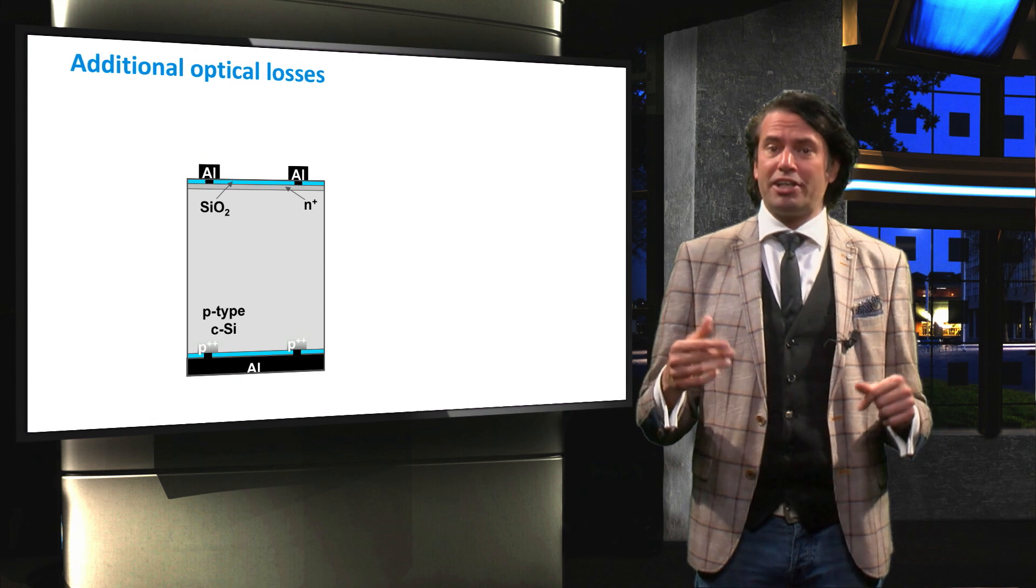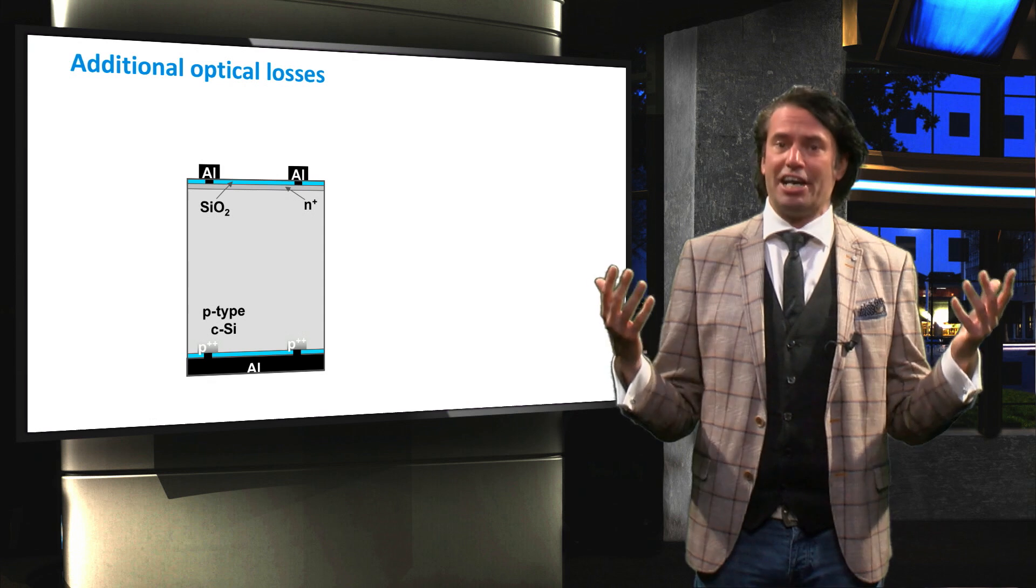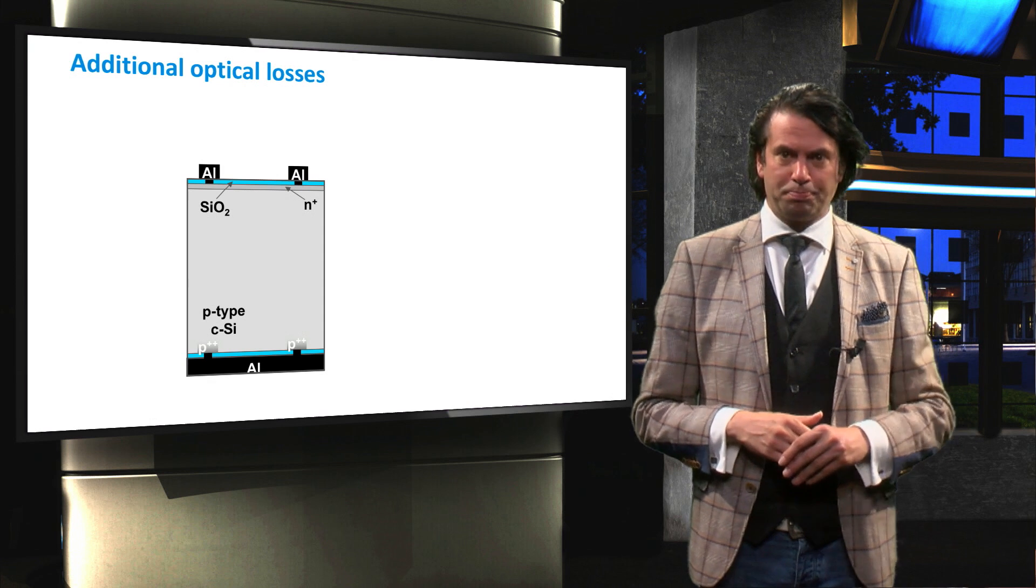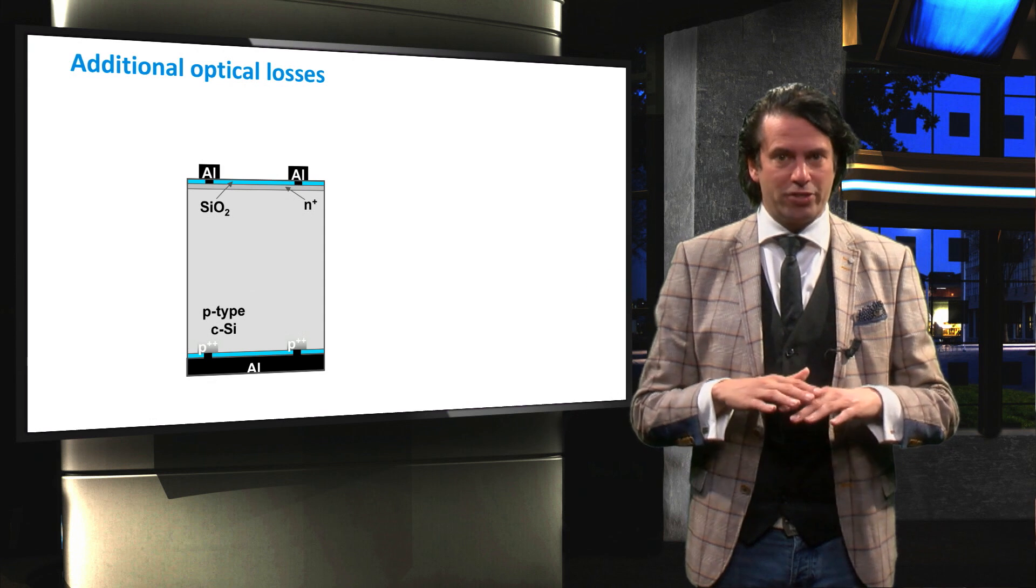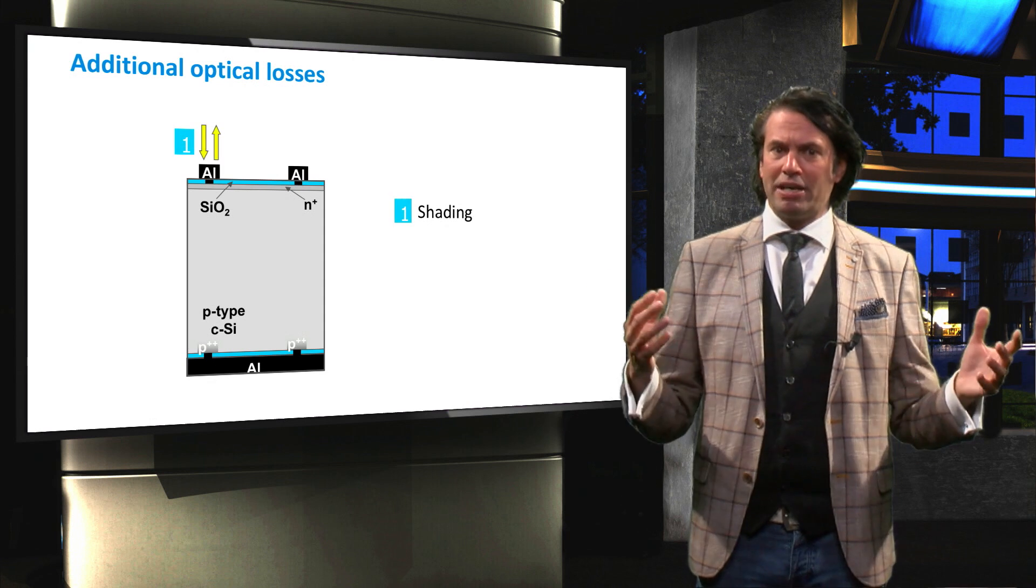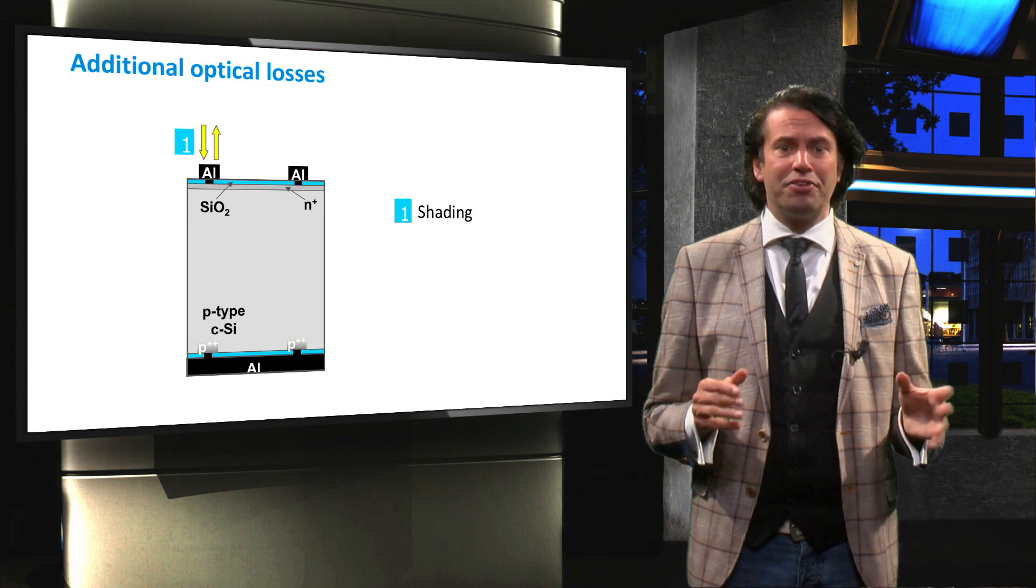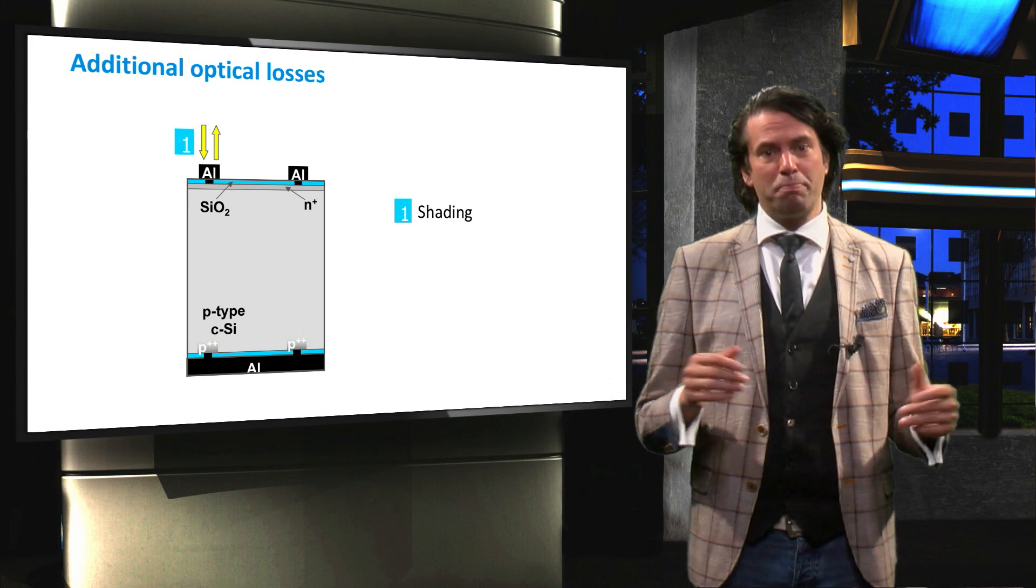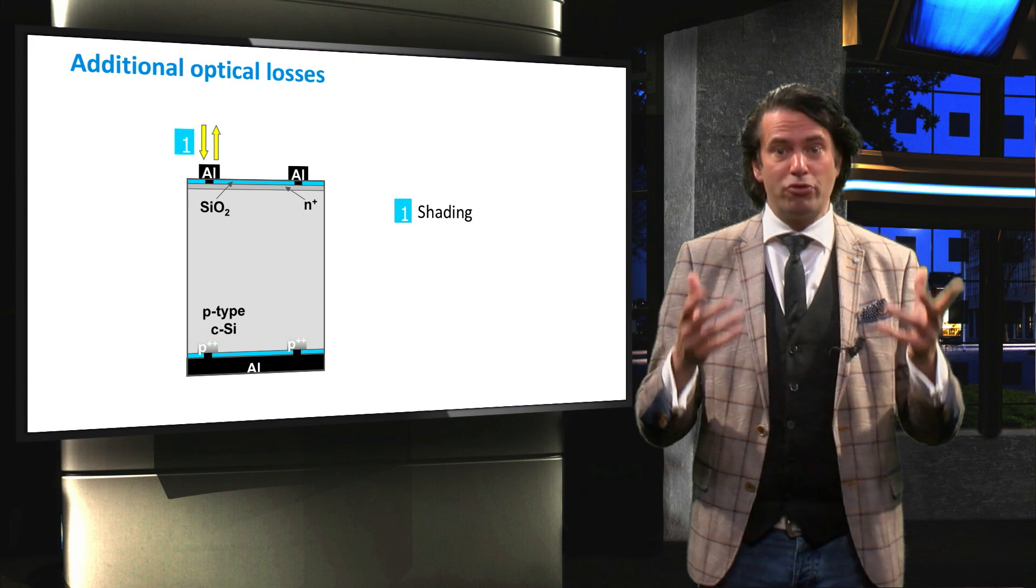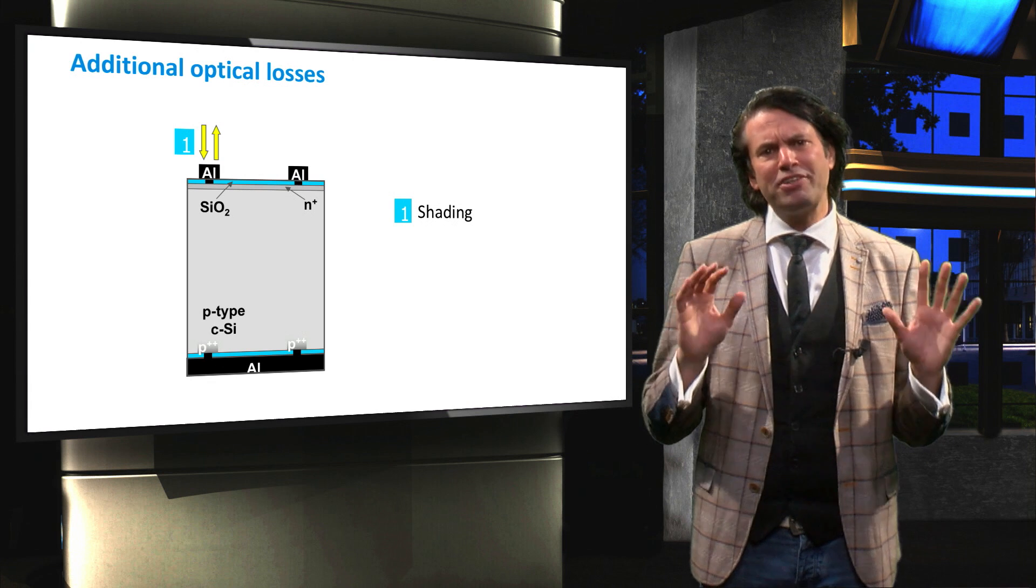We will use the standard crystalline silicon solar cell shown here to demonstrate each of the additional loss mechanisms. Part of the solar module surface is covered by a metal grid. As this metal grid is not transparent to the incident light, the area under the grid is shaded.